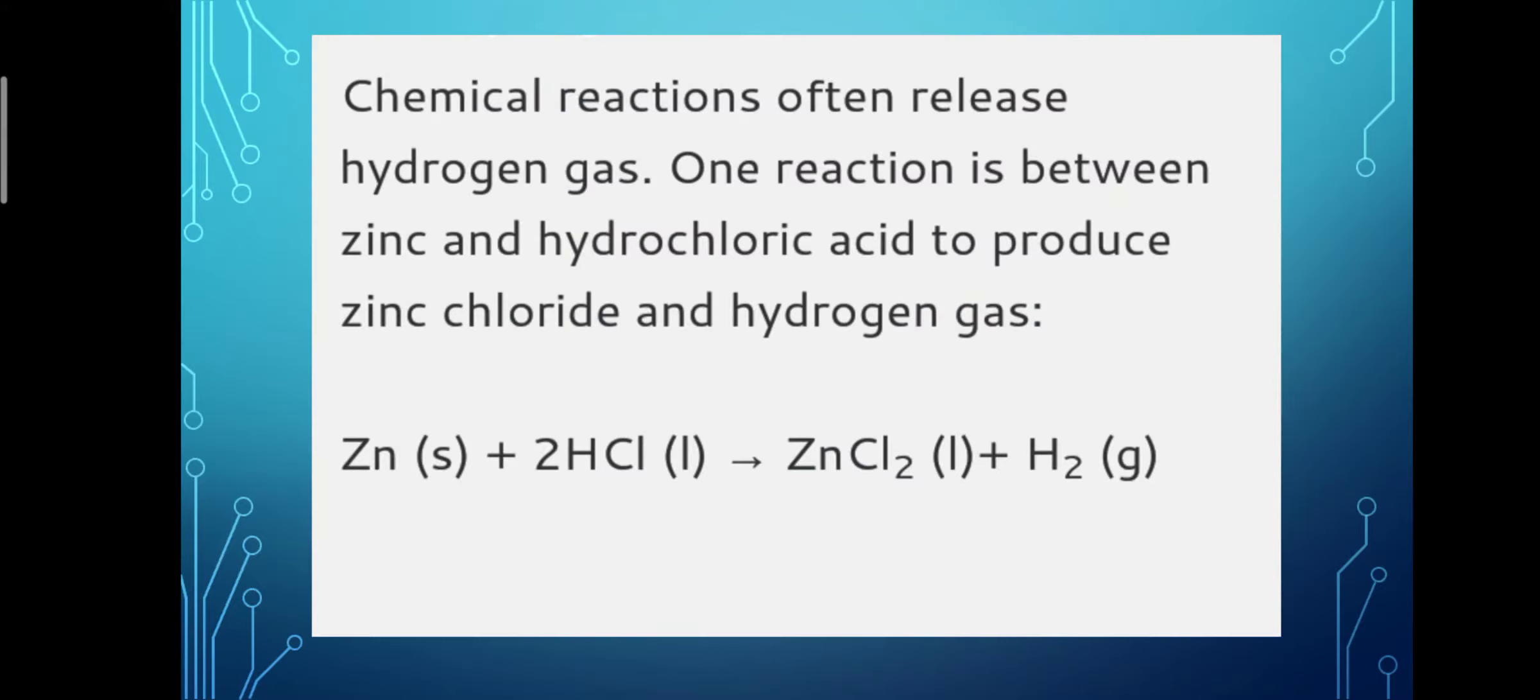Chemical reactions often release hydrogen gas. One reaction is between zinc and hydrochloric acid to produce zinc chloride and hydrogen gas: Zn(s) + 2HCl(l) → ZnCl₂(l) + H₂(g).